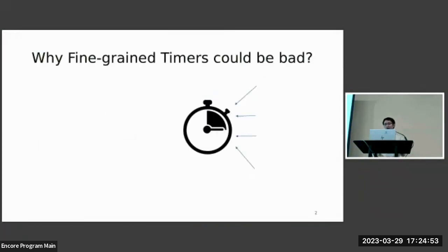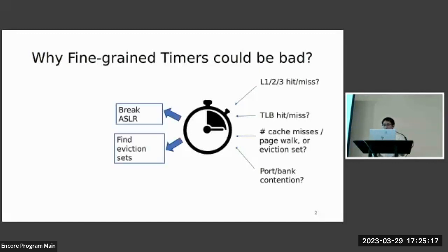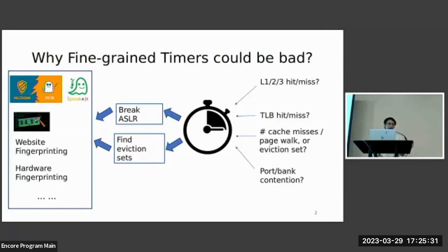First of all, why do side channel attacks need fine-grained timers? This is because almost every side channel relies on timing to extract critical information during the attack. Is this memory access a cache hit or miss? What about TLB hit or miss? How many cache misses occur during this page walk or eviction set iteration? Is there any contention of ports, banks, or even network on-chip? A fine-grained timer feeds this information to attackers so that they can either find eviction sets, break address-based layout randomization, or complete other necessary steps which finally lead to a successful exploit.